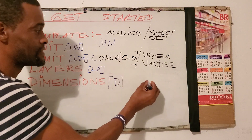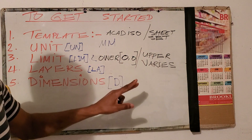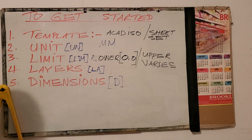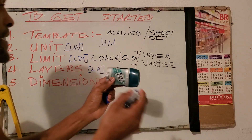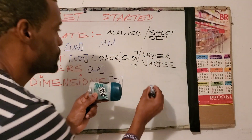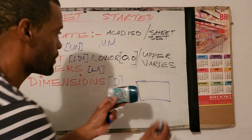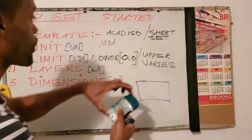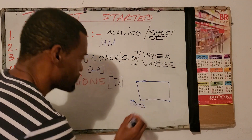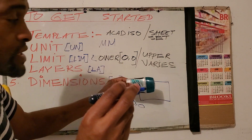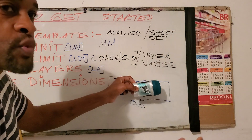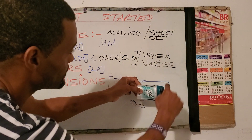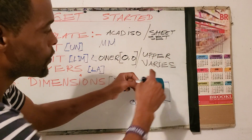We start drawing at zero. The upper limit varies somewhat — it depends on the actual size of the drawing. Limit is basically an imaginary rectangle that we establish so that the drawing can fit into it. Our lower limit would be zero comma zero, and our upper limit would be from here to here, of course with some allowance for dimensioning.